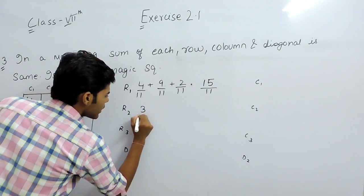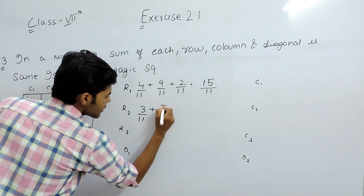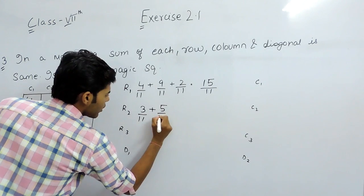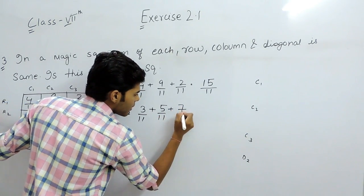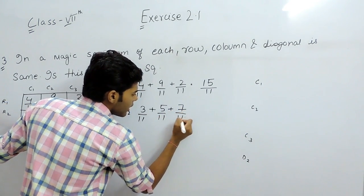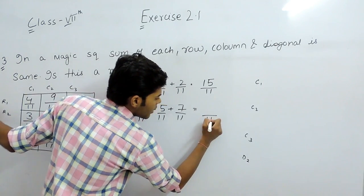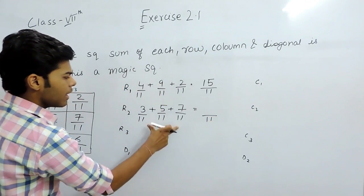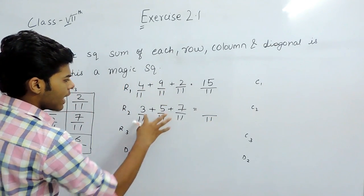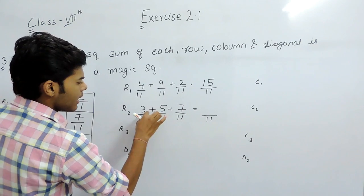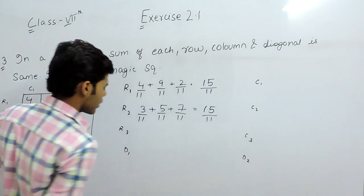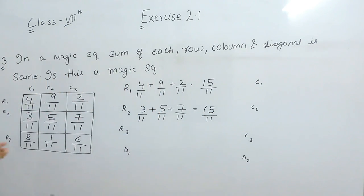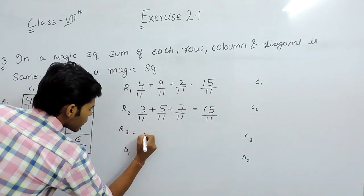Now we will check the second row: 3 upon 11 plus 5 upon 11 plus 7 upon 11. Again the LCM will be 11. Now we will add: 7 plus 3 is 10 and 10 plus 5 is 15. So again it will be 15 upon 11.